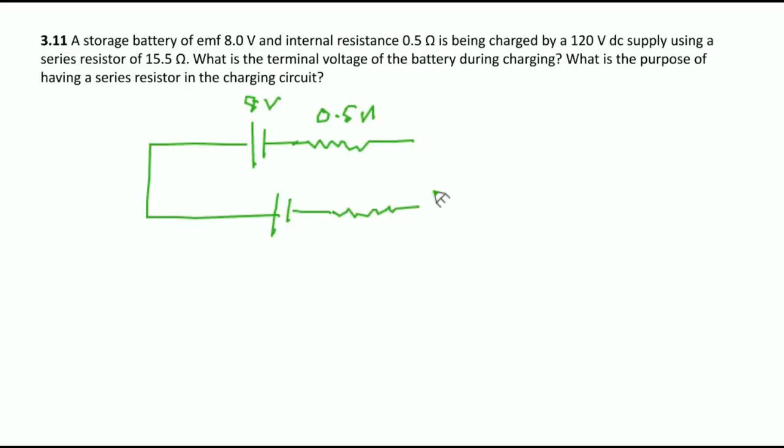This is given 120 volt. First you have to find the current. What is the current? Current will be - because this is 120, net potential difference - both are in the opposite, you can see here.